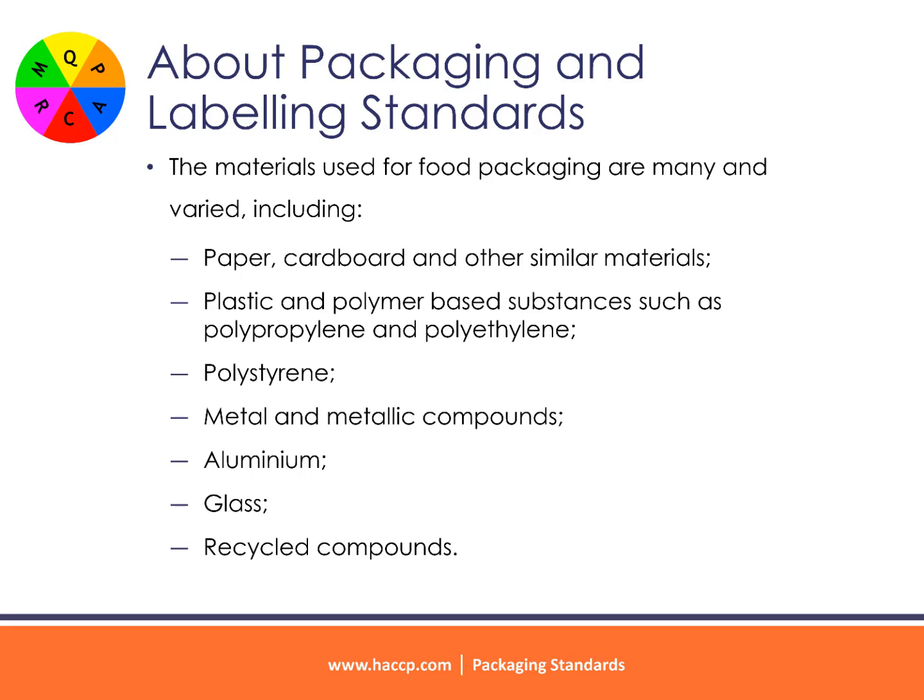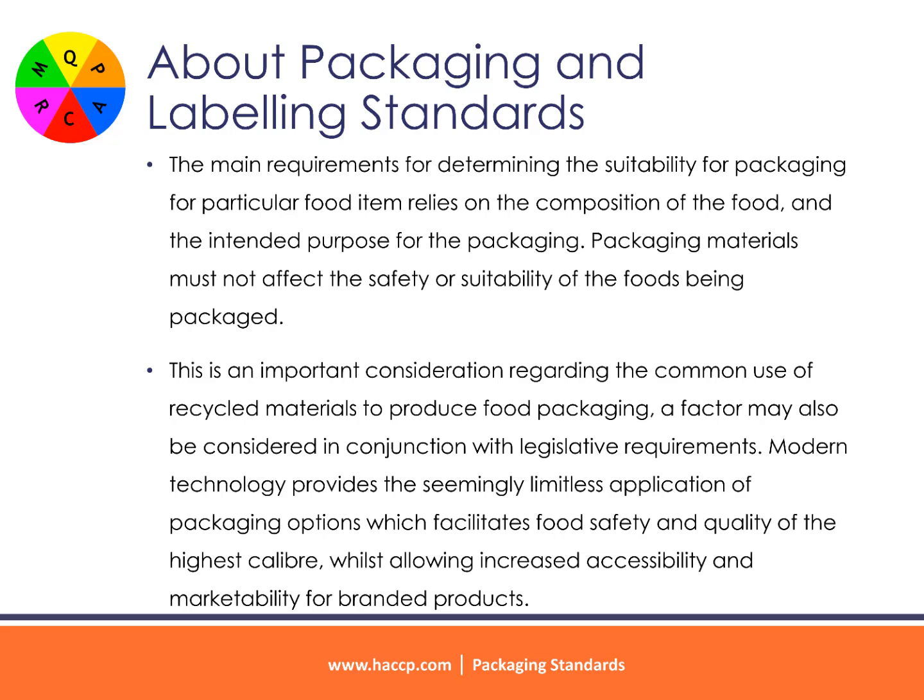The materials used for food packaging are many and varied, including paper, cardboard and other similar materials; plastic and polymer-based substances such as polypropylene and polyethylene; polystyrene; metal and metallic compounds; aluminum; glass; and recycled compounds. The main requirements for determining the suitability of packaging for a particular food item rely on the composition of the food and the intended purpose for the packaging. Packaging materials must not affect the safety or suitability of the foods being packaged — an important consideration regarding the common use of recycled materials to produce food packaging, a factor that may also be considered in conjunction with legislative requirements.